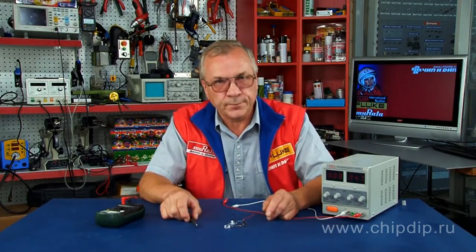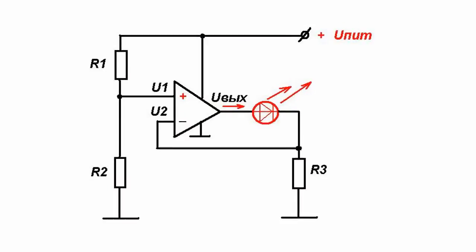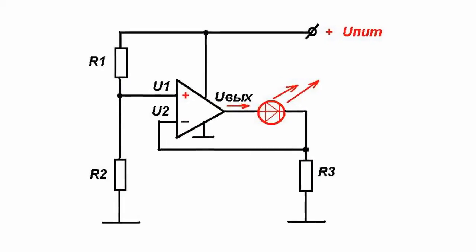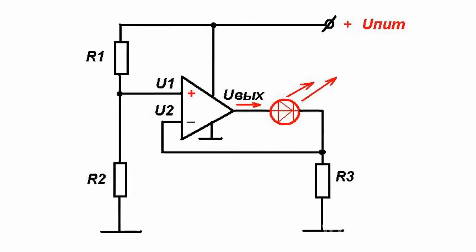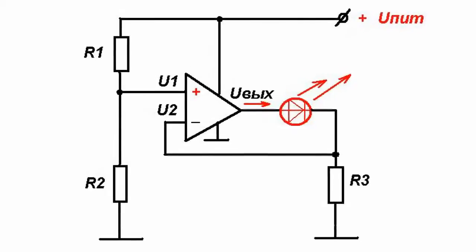The current that flows through the resistor and the LED is the same. If we stabilize the voltage drop at the resistor, we will simultaneously stabilize the current flowing through the LED.